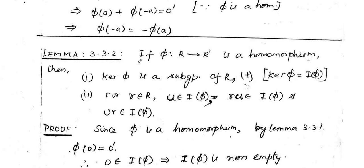In the next lemma, we prove that if phi from R to R prime is a homomorphism, then kernel phi is a subgroup under addition. For any r in R and u being a member of kernel phi, we are going to prove that both r·u and u·r belong to kernel phi.